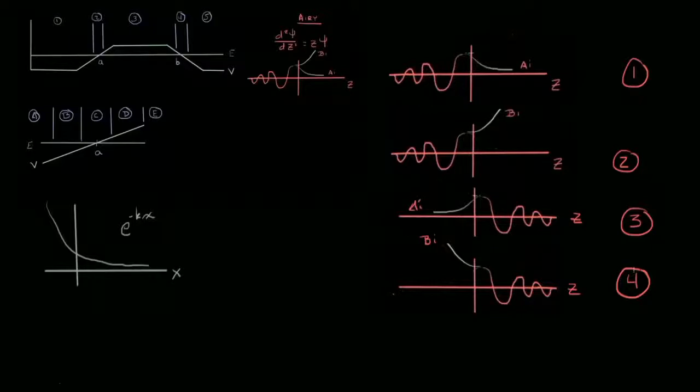Graph one is what we traditionally looked at where we have some sort of exponential decay going from left to right. Graph two is where we saw an exponential increase going from left to right. Please note that this area for A and for B look very similar but they are not the same. There is a phase factor involved there.